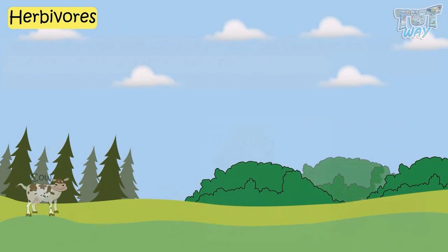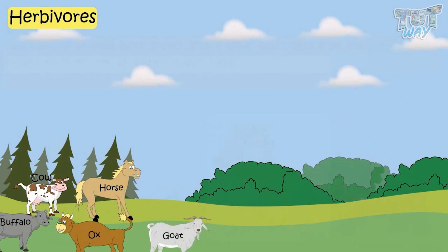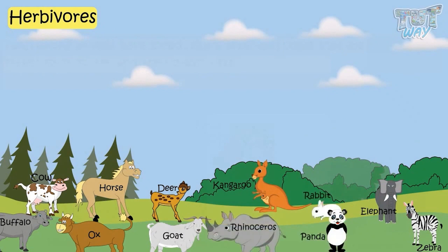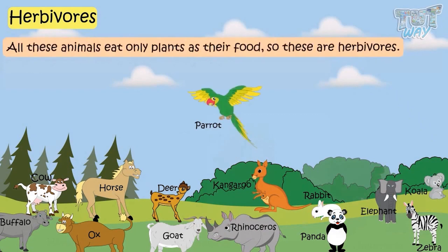Examples of herbivores include cow, buffalo, ox, horse, goat, deer, zebra, elephant, kangaroo, rabbit, panda, rhinoceros, koala, parrot, and tortoise. All these animals eat only plants as their food, so these are herbivores.